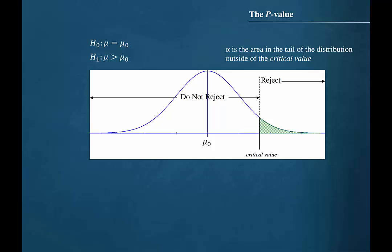Alpha is the probability of committing a type 1 error, which is to reject a true null hypothesis. So alpha is the area under the curve that is shaded in green.